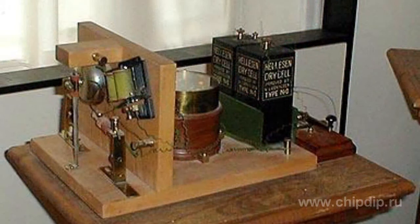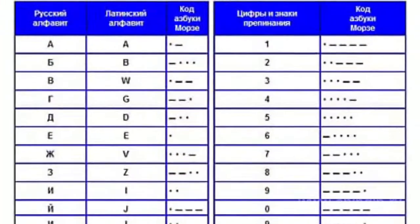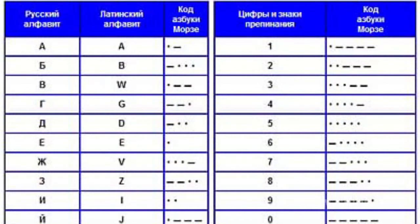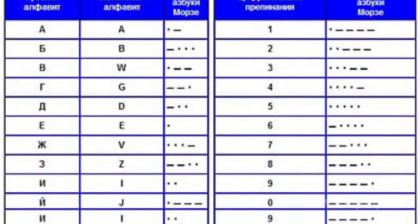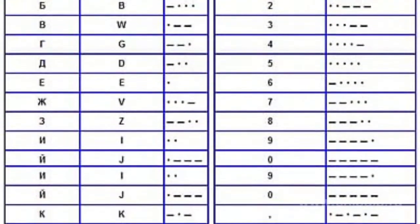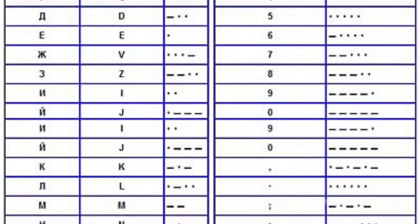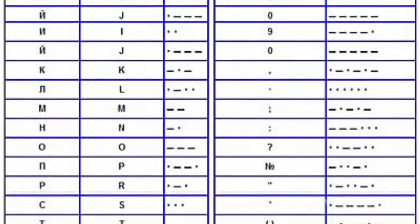Previously, when information transmission via radio signal was still developing, technical features of receiving and transmitting equipment did not allow transferring the voice signal over long distances. So text information was used instead of voice information. Since text consists of letters, these letters were transmitted by means of long and short pulses of an electrical tone signal. In such a signal, bits of information are conventionally called the dot and the dash. A short-toned signal stood for a dot and a long-toned signal for a dash.